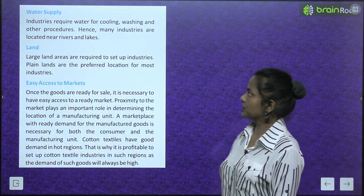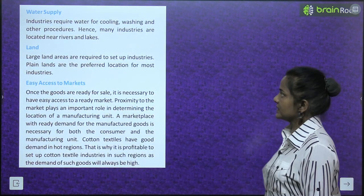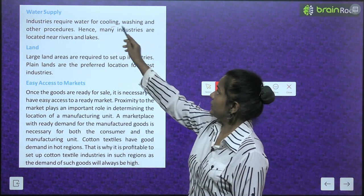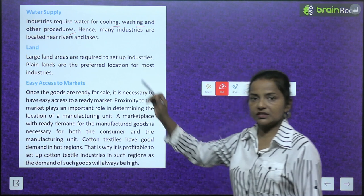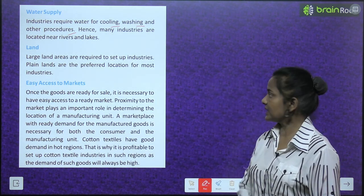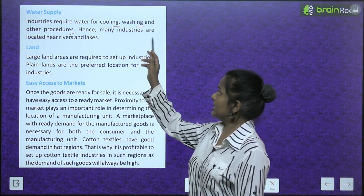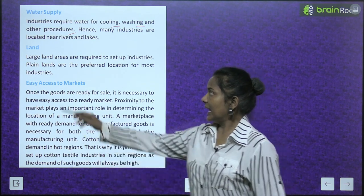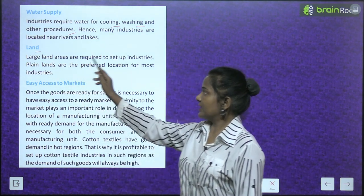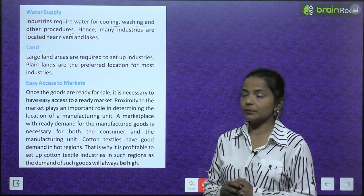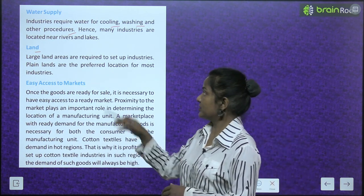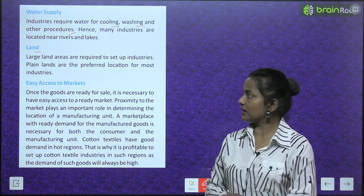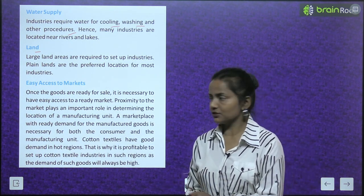Next comes water supply. Industries require water for cooling, washing and other procedures. Hence, many industries are located near rivers and lakes. Land: large land areas are required to set up industries. Plain lands are the preferred location for most industries.